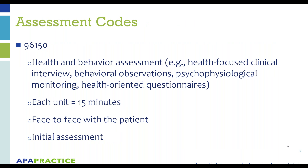In terms of the assessment codes, the first and by far most critical one is 96150. This is the base code — essentially where you start from. You cannot do an assessment unless you start with 96150. The title is 'health and behavior assessment,' very generic. It includes interview, observation, psychophysiological monitoring, questionnaires, and/or tests — any combination thereof. We're talking about 15-minute increments. Each 15 minutes is one unit, so on the insurance form, one unit equals 15 minutes. If you do 30 minutes, it's 2 units; 45 is 3.